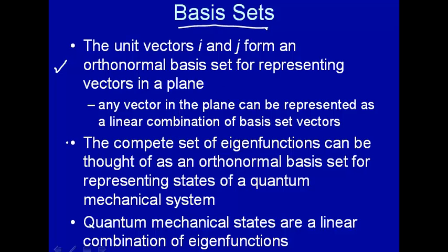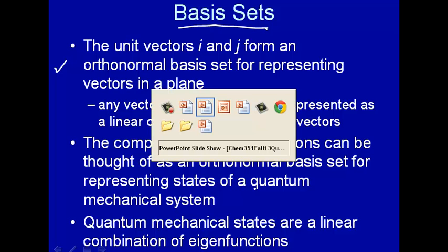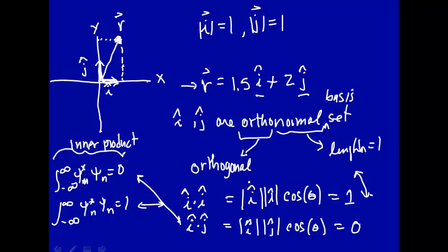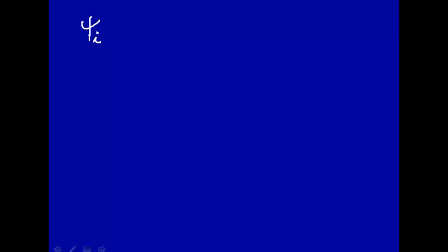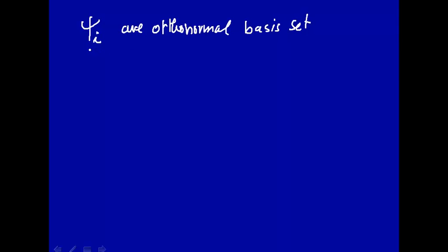Now let's shift to quantum mechanics. The complete set of eigenfunctions can be thought of as an orthonormal basis set for representing states in a quantum mechanical system. Remember we had eigenfunctions and eigenvalues — these eigenfunctions satisfy an eigenvalue equation, and the functions that give you that eigenvalue equation are called eigenfunctions.